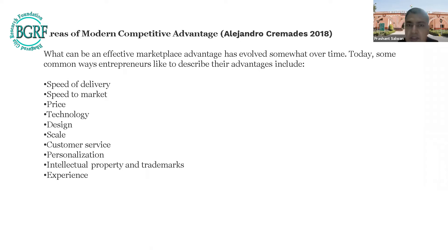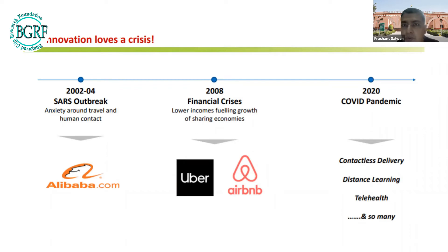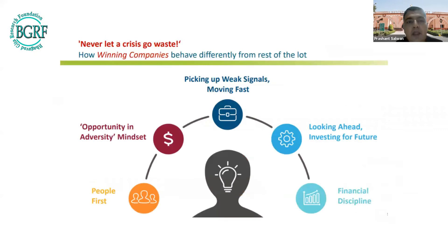Modern competitive advantages include speed of delivery, speed to market, price, technology, design, scale, customer service, personalization, intellectual property, and experience. During crises like SARS 2002, the 2008 financial crisis, and the 2020 COVID pandemic, firms that did well shared three characteristics: they created, destroyed, and sustained their current value creation activities.